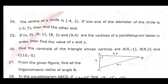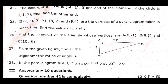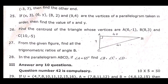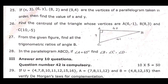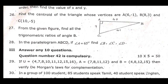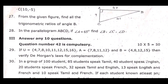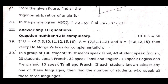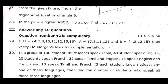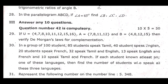22nd: The angles of a triangle are in the ratio 1:2:3, find the measure of each angle. 23rd: Find the value of x in the following figure. 24th: The center of a circle is (-4, 2); if one end of the diameter is (-3, 7), find the other end. 25th: If (x, 3), (6, y), (8, 2) and (9, 4) are the vertices of a parallelogram taken in order, find the value of x and y. 26th: Find the centroid of the triangle whose vertices are A(6, -1), B(8, 3), C(10, -5). 27th: From the given figure, find all the trigonometric ratios of angle B. 28th: In the parallelogram ABCD, if angle A equal to 65 degrees, find angle B, angle C, angle D.